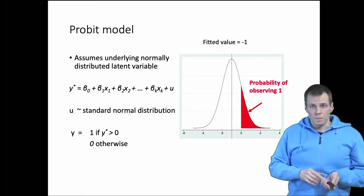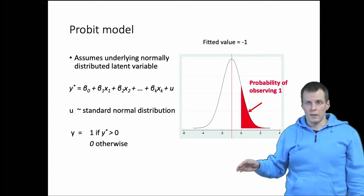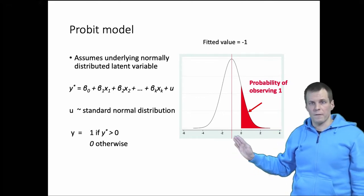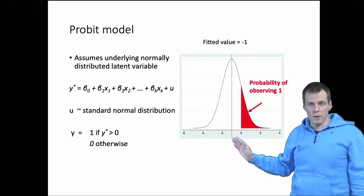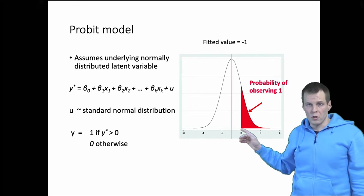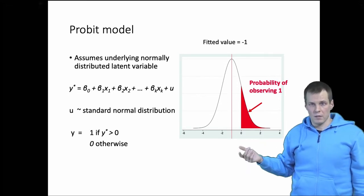The idea is that when we do a probit model, we calculate the linear prediction. So let's say that the fitted value of the linear prediction is minus 1 here. Then we draw a standard normal distribution around the fitted value, so the mean is minus 1, standard deviation is 1.